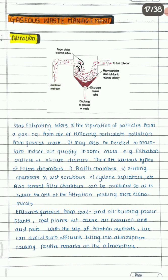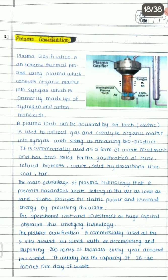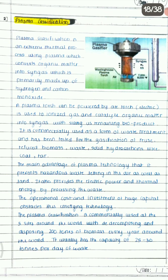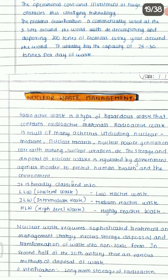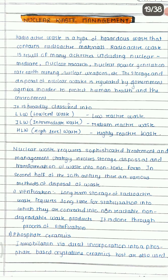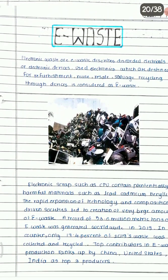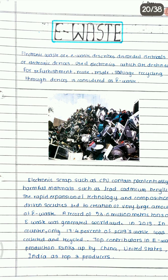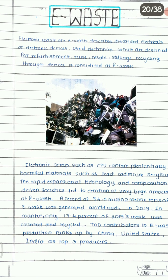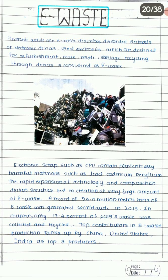After that we have gaseous waste management. There are several impurities in the atmosphere, so you have to mention how these impurities or wastes are managed and by which techniques, with good pictures. Then we have nuclear waste management and e-waste management — e-waste means all the electronic scrap and electronic wastage material.